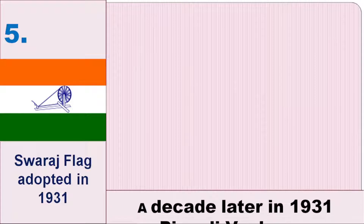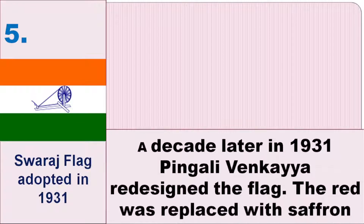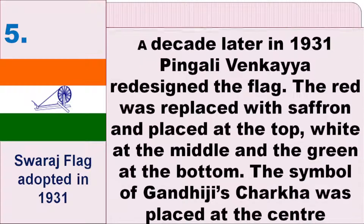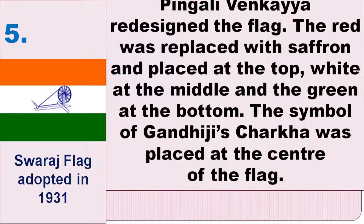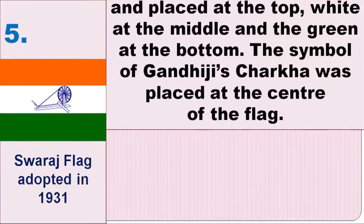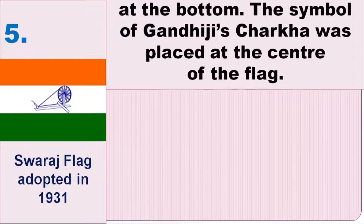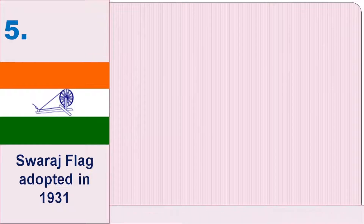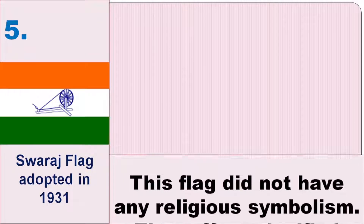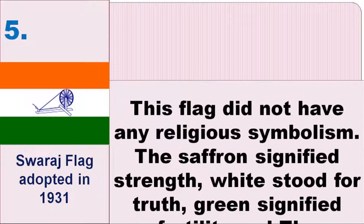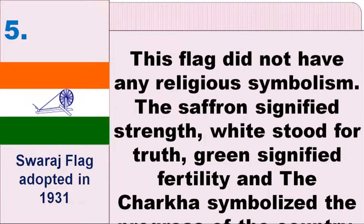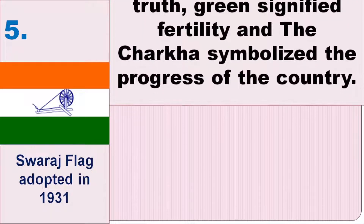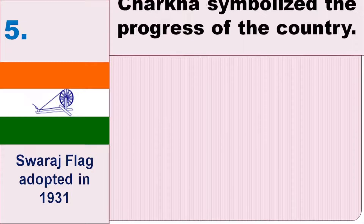In the fifth phase, a decade later in 1931, Pingali Venkayya redesigned the flag. The red was replaced with saffron and placed at the top, white in the middle, and green at the bottom. A symbol of Gandhiji's Charkha was placed at the center of the flag. This flag did not have any religious symbolism — saffron signified strength, white stood for truth, green signified fertility, and the Charkha symbolized the progress of the country.